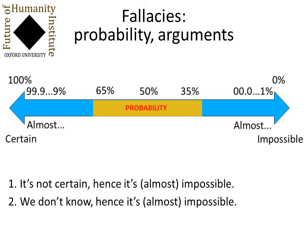The second fallacy is: we don't know, hence it's impossible. This is often done with futuristic technologies like AI development, where we say we don't know when it could happen, so we're not going to worry about it — it certainly won't be in our lifetime. But where does the certainty of it not being in our lifetime come from? That's a strong statement. This fallacy makes an even more egregious error than the first: it says something lies in the middle range — which is what 'we don't know' means — and concludes from that it lies at the impossible end.